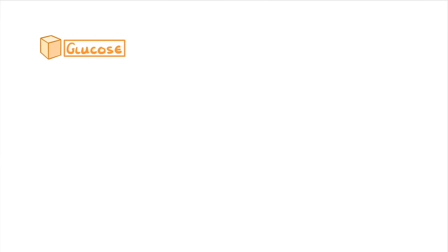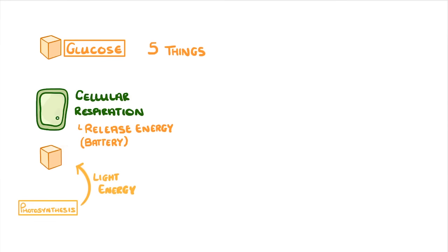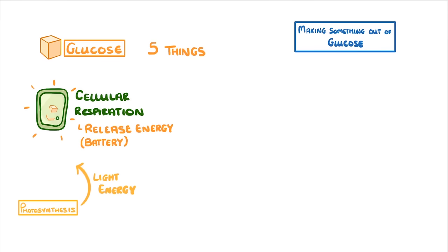Glucose is essential and it's used mainly for five things. One is cellular respiration, which breaks the glucose apart to release energy. You can think of glucose as a battery — photosynthesis traps the sun's light energy in glucose molecules, and then other cells around the plant can break the glucose apart again to release that energy when they need it.